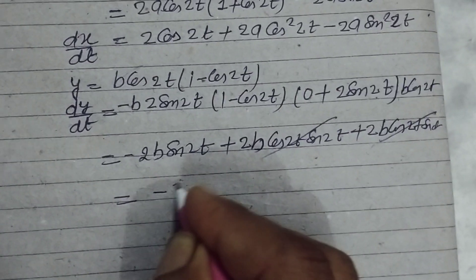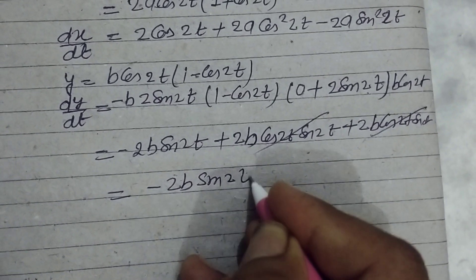These terms cancel out, we get -2b sin 2t.